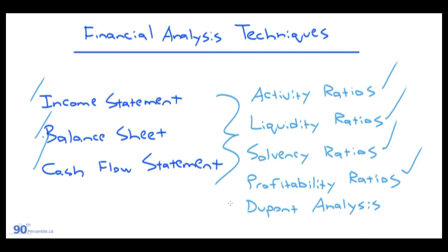The most common ratios being activity ratios, liquidity ratios, solvency ratios, and profitability ratios. We'll understand the most popular types of ratios in each category and what that implies for the health or outlook of a company. And finally, at the very end, we'll touch on the DuPont Analysis, which decomposes ROE or return on equity into different components to understand how different business decisions across all three statements impact return on equity.